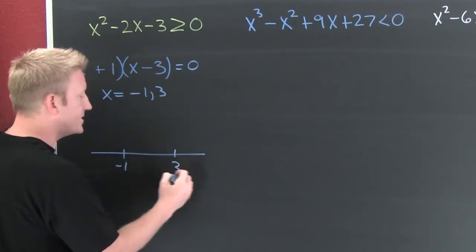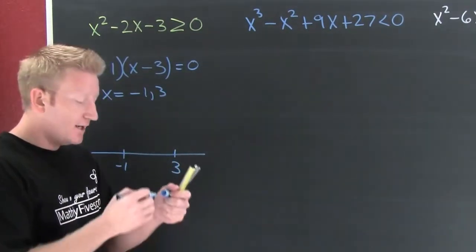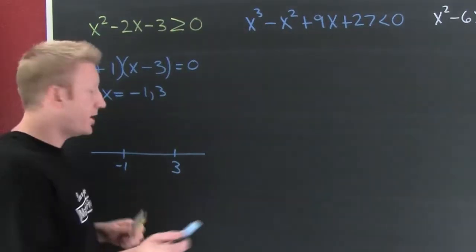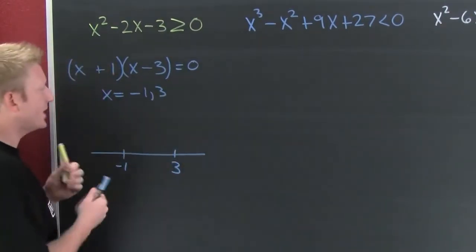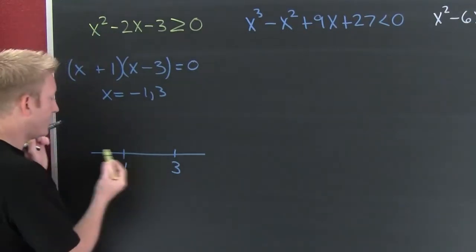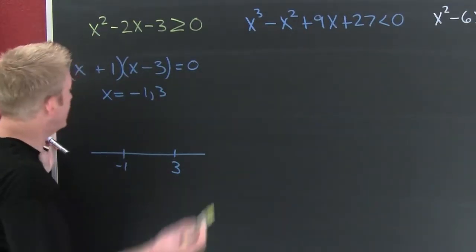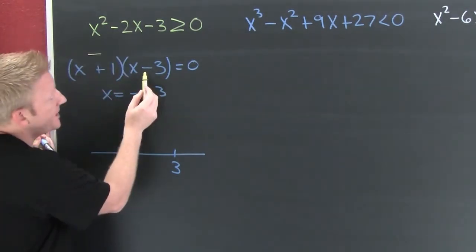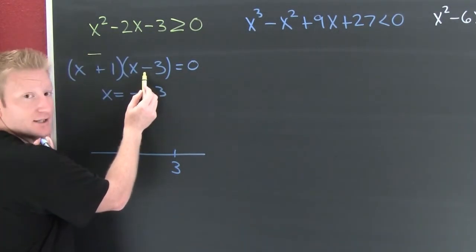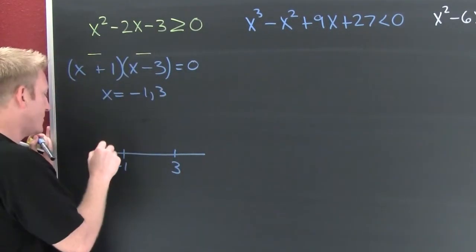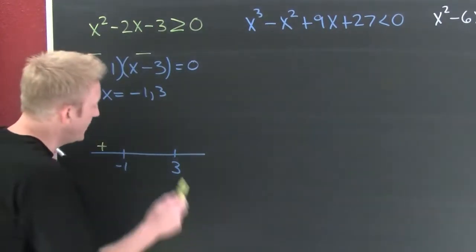Now what I want to do is check my products in between these values. So I need a number less than minus one. What's a number less than minus one? How about minus ten? Let's go up here. Minus ten is going to make this factor positive or negative? It's going to make this factor negative. Minus ten is going to make this factor positive or negative? It's going to make this factor negative. Negative times negative is positive in this region below there.